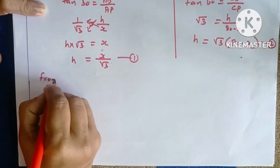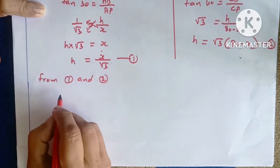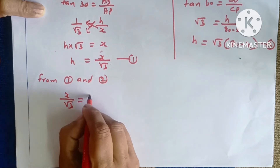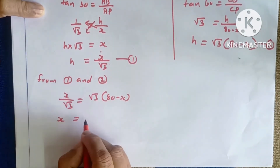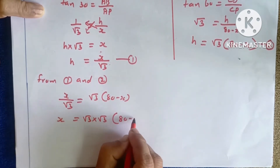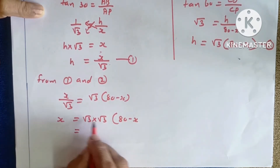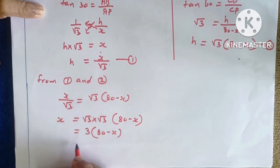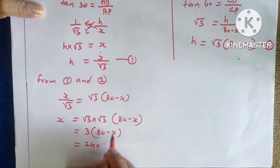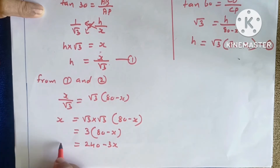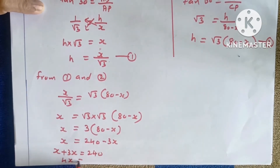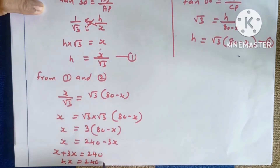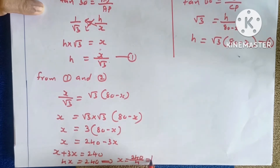From equations 1 and 2: X divided by root 3 equals root 3 into (80 minus X). Multiplying both sides by root 3: X equals 3 into (80 minus X). So X equals 240 minus 3X. Therefore X plus 3X equals 240, giving 4X equals 240, so X is equal to 240 divided by 4, which equals 60 meters.